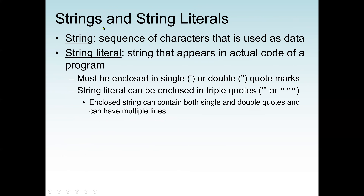A string is a sequence of characters used as data. A string can contain letters like A, B, C, digits like 1, 2, 3, or special symbols like a question mark. What makes it a string is that it must be enclosed in single or double quotation marks. A string can also be enclosed in triple quotes, which allows it to contain both single and double quotes and span multiple lines.